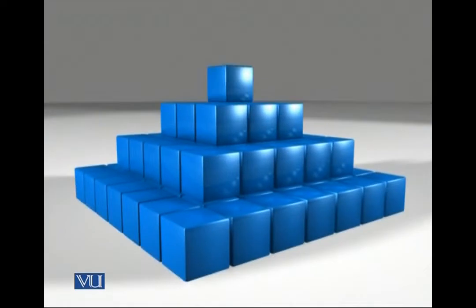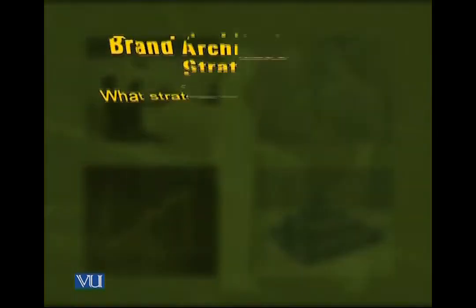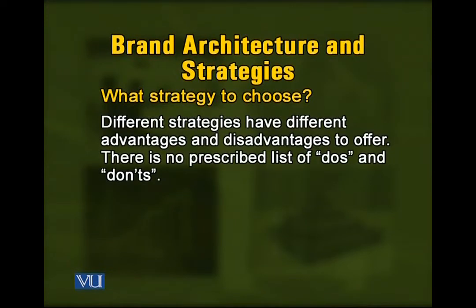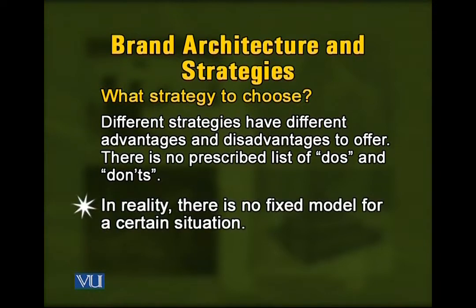The six models we have discussed are the typical cases of branding strategies employed by different companies as brand architecture. The most important question is which strategy to employ. There is no one particular strategy which you should be employing under one set of circumstances — there is no one fixed model and no one answer to this question.